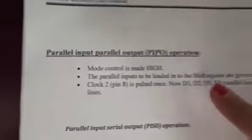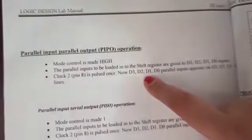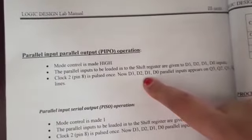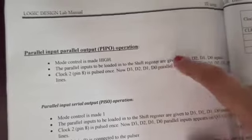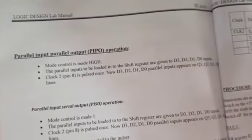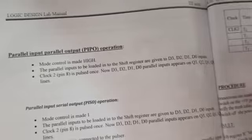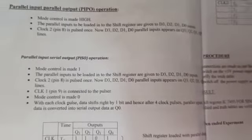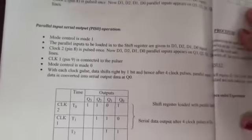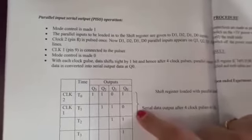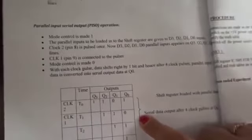For parallel in parallel out, mode control is high because we are loading parallel data and clock pin number 8 is enabled. We give all inputs at the same time and get the same outputs. It is the easiest operation of all four because both input and output are parallel.